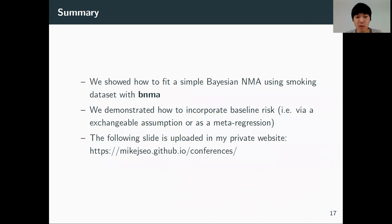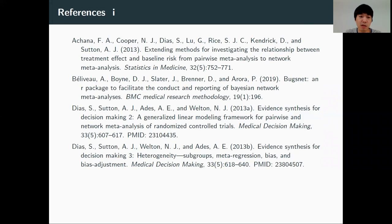To summarize, we showed how to fit a simple Bayesian NMA using the smoking dataset with the BNMA package. We demonstrated how to incorporate baseline risk via an exchangeable assumption or a meta-regression. The following slide is uploaded in my private website, mikejseo.github.io. And here are the references. Thank you.